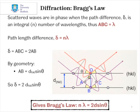By simple geometry, we can see that this distance ABC is equal to 2AB, and that by simple geometry, AB must equal d, that is the spacing between the two planes, multiplied by sin θ, where θ is the angle of reflection.